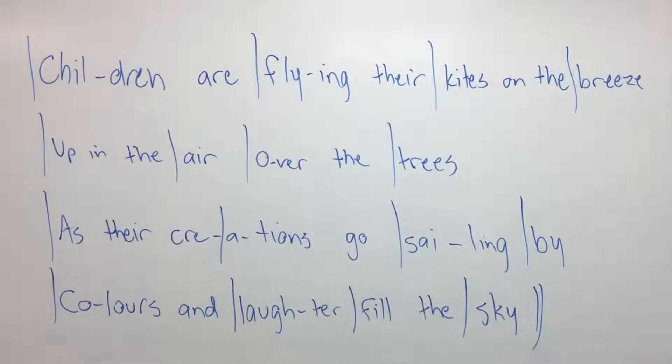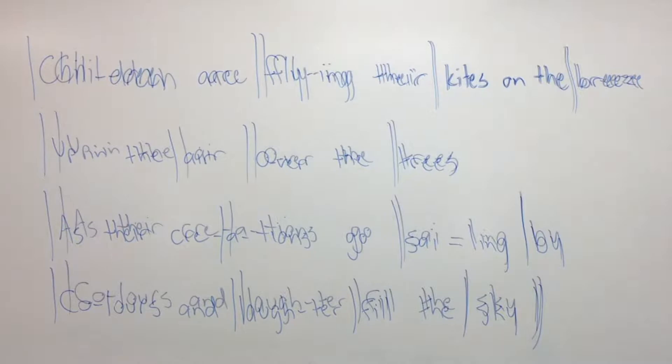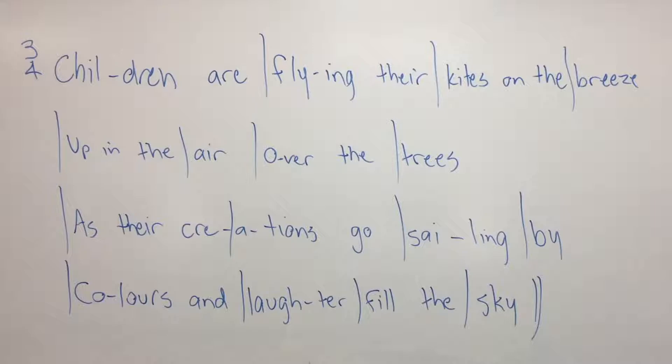Now that we have our bar lines, we should be able to determine our time signature. A quick look back at our words will reveal that there are three main beats between each stress point. And three beats per bar means 3/4. So the time signature for our song will be 3/4. Very simple. Now we have bar lines and a time signature.